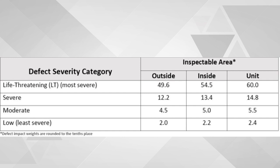Now all you have to do is subtract your total size adjusted defect points from 100 and you get your score. The score would be 84.09. Rounding it, it would give us 84.